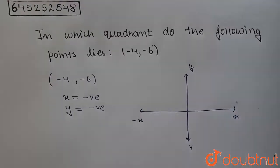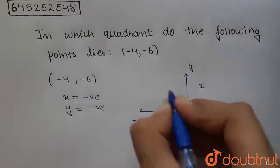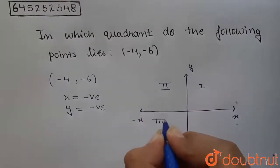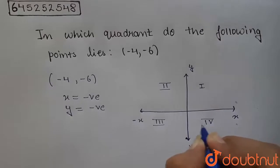So what we can say is we are having 4 quadrants here. This is the first quadrant. This is the second quadrant. This is known as the third quadrant and this is known as the fourth quadrant.